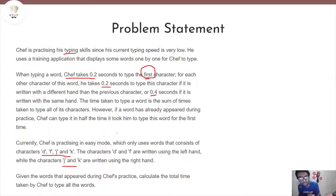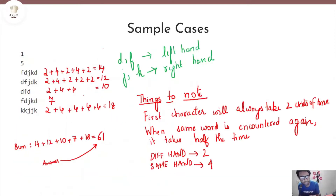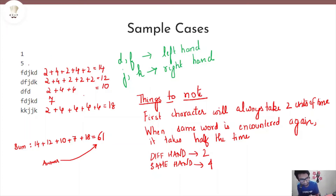Let us look at the sample input to make this clear. Here, T is 1 — that is 1 test case. N is 5, meaning there are 5 strings or words provided to us. Let us look at this step by step. For reference: D and F are written using the left hand, and J and K are written using the right hand — I've noted this so you can refer to it while we compute each word.